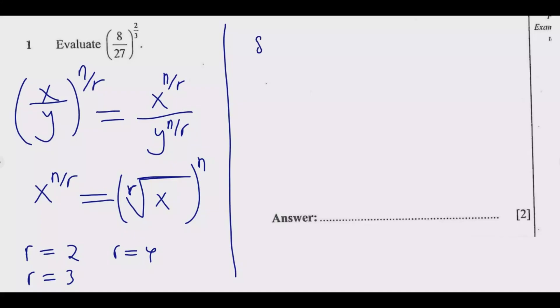The question we are facing now is (8/27) to the power 2/3. Using this principle we have 8 to the power 2/3 divided by 27 to the power 2/3.